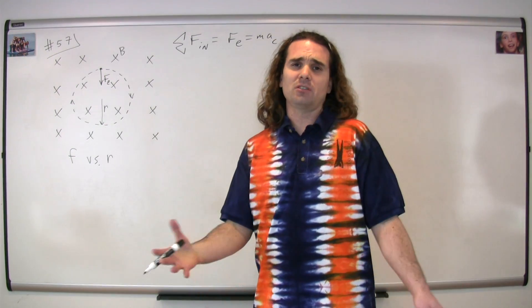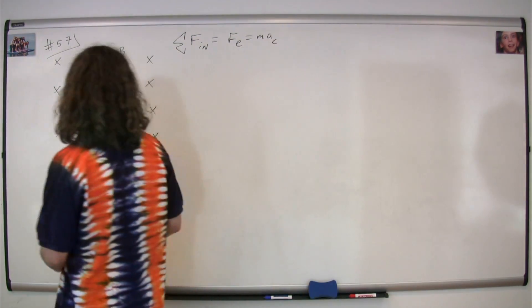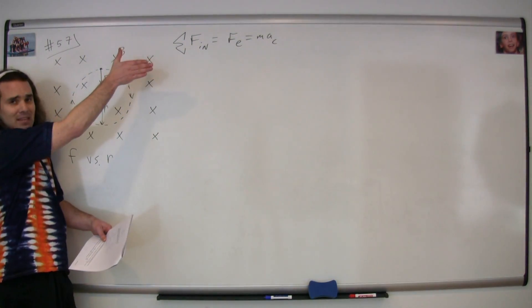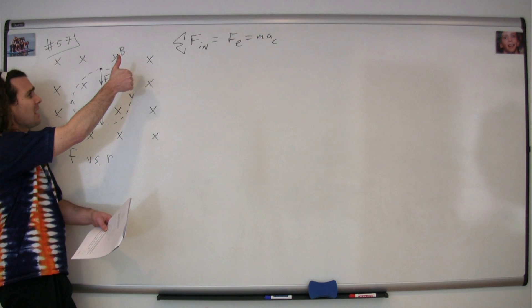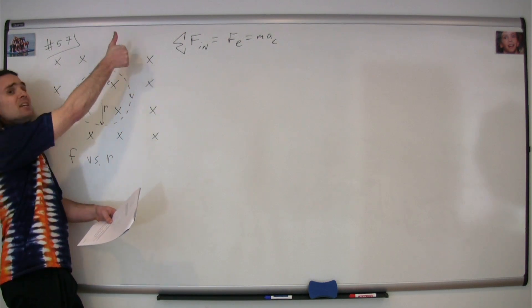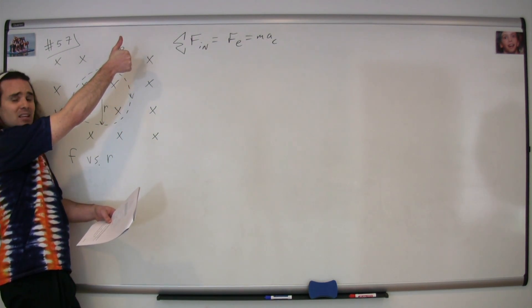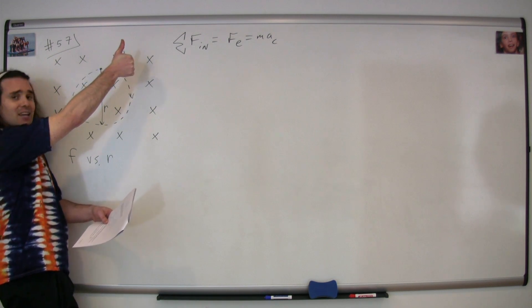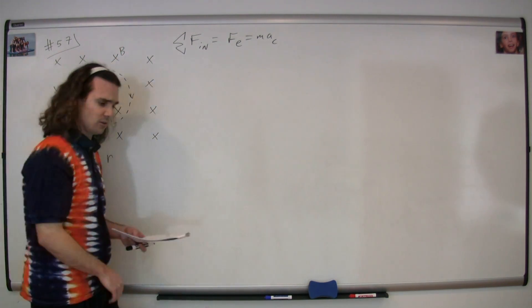I'll walk through the right hand rule here just for fun. We have the velocity of the particle to the right, the magnetic field into the board. Therefore our magnetic force is not up because it's a negatively charged particle—it's opposite the direction of our thumb, so it's going to be in toward the center of the circle.